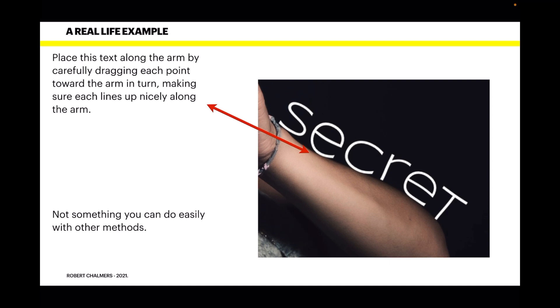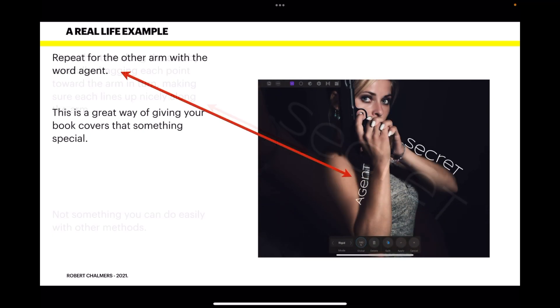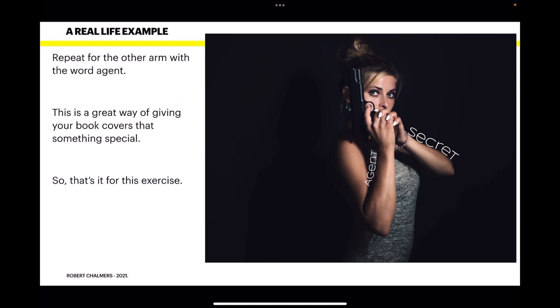Now where would you use this? Well, it springs to mind that book covers are one good area, somewhere where you want to emphasise something. So, repeat for the other arm with the word Agent. This is a great way of giving your book covers that something special. And the finished article looks like that.